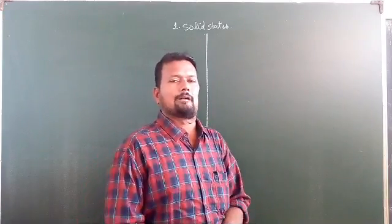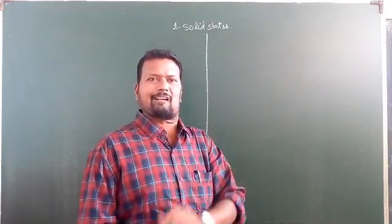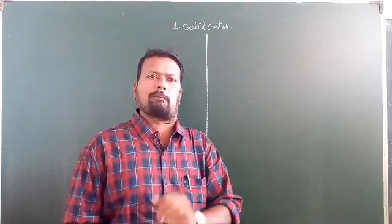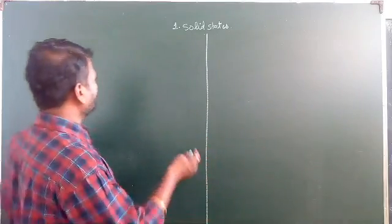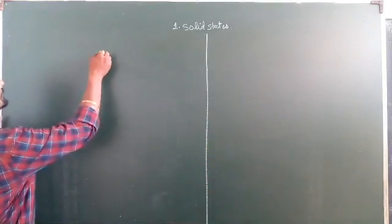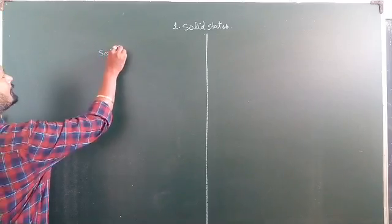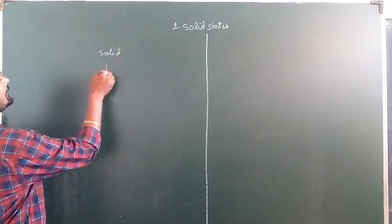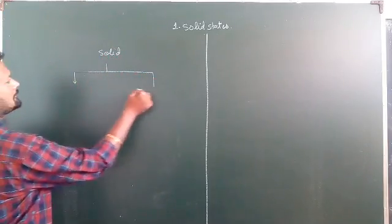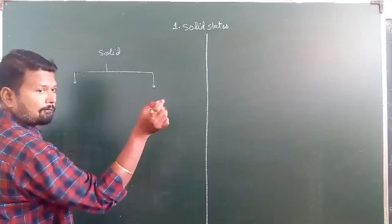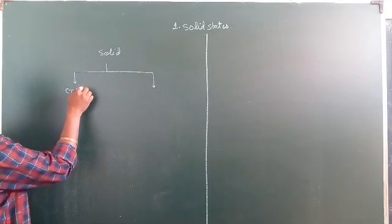Before going further, we should know that there are two types of solids. The first type is crystalline solid.